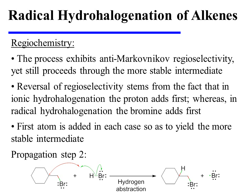During propagation step two, the tertiary radical abstracts a hydrogen atom from an unreacted molecule of HBr to produce the alkyl bromide reaction product and regenerate the bromine radical. This process exhibits anti-Markovnikov regioselectivity, yet still proceeds through the more stable intermediate. The reversal of regioselectivity stems from the fact that in ionic hydrohalogenation the proton adds first to generate the more stable carbocation, whereas in radical hydrohalogenation the bromine adds first to generate the more stable radical. In each case, the first atom adding to the alkene is added so as to create the more stable intermediate.